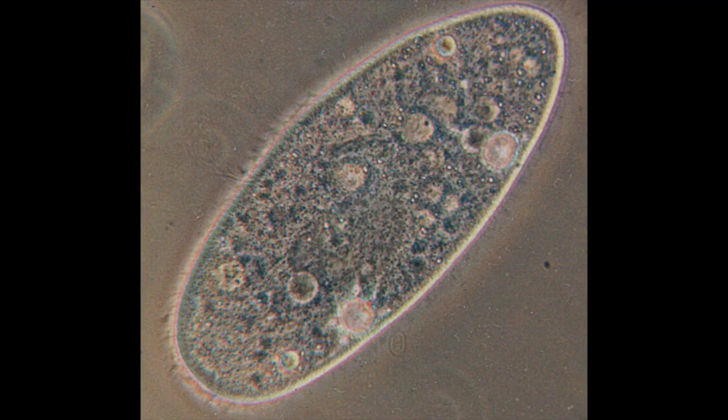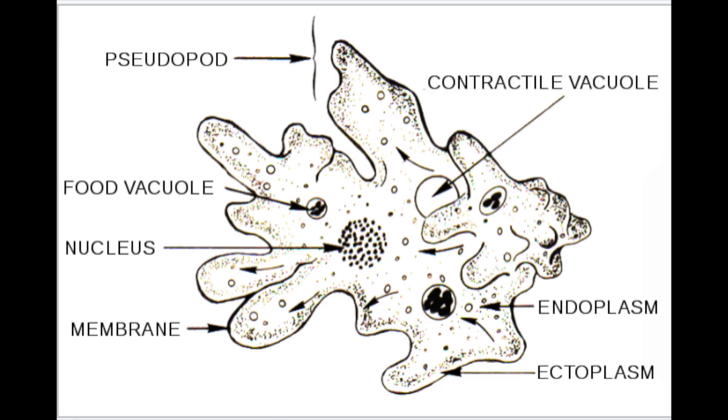An example of a unicellular organism, containing only one cell, is the paramecium, which is an example of a protoctist. Amoeba is a second example.